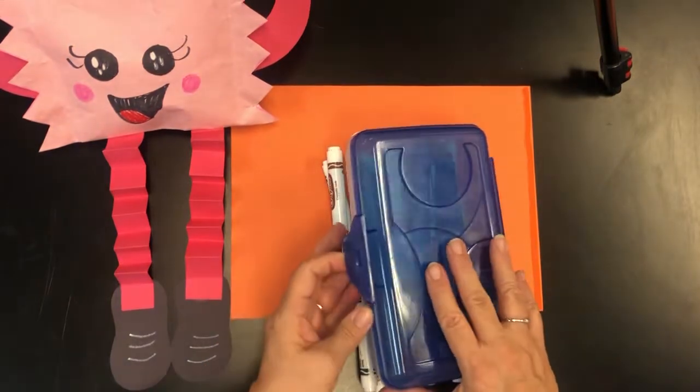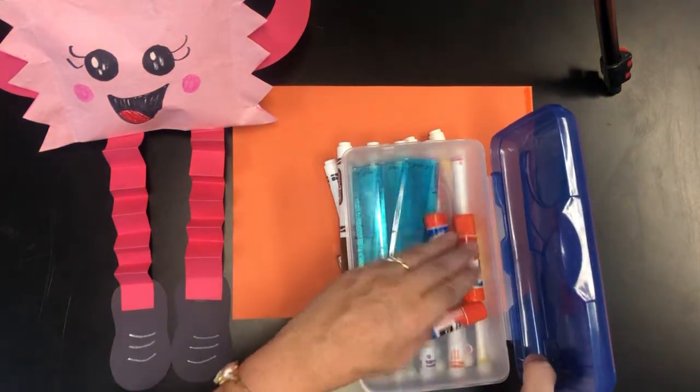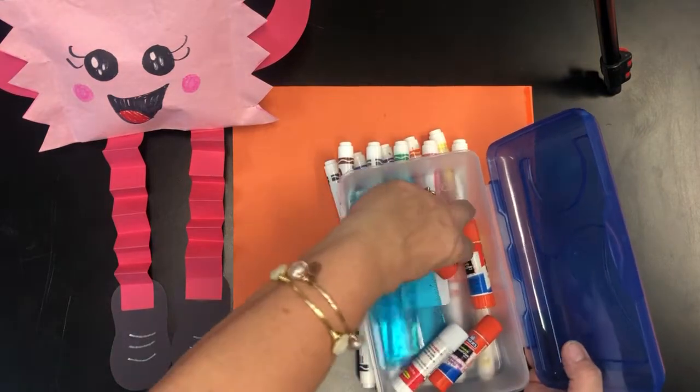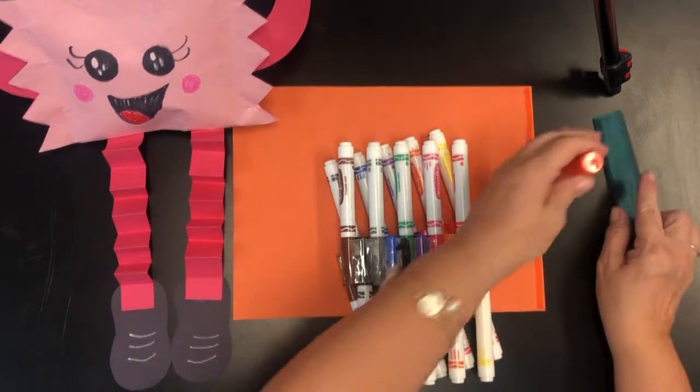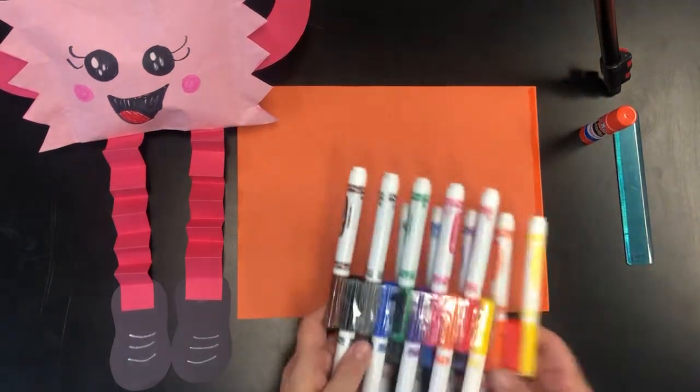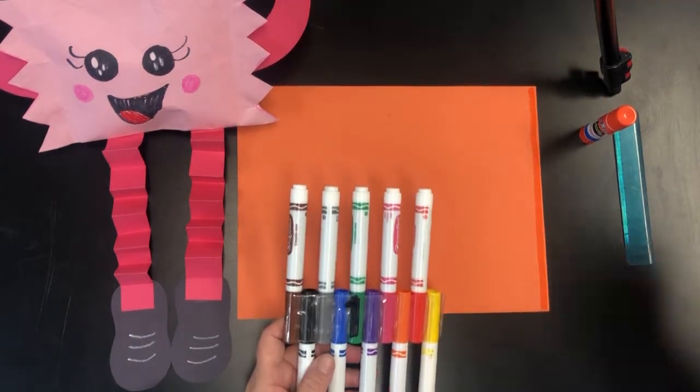In the box you're gonna find four rulers and four sticks of glue. So I'm gonna take out a ruler and glue and put those aside because I'm gonna need them in a minute and I've got a set of markers here.